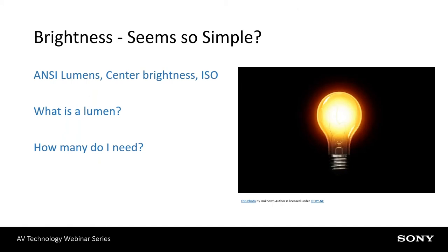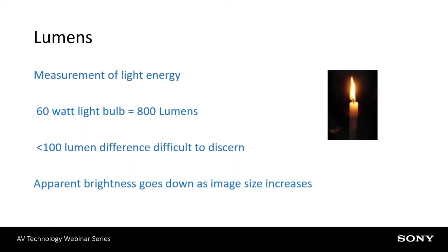Brightness seems simple enough — it's how much light does a projector put out. But it's probably not quite that simple. When you talk about brightness, you'll see specifications for something called an ANSI lumen, center brightness measurements, and the ISO has a standard. The real question is: what is the lumen and how many do I need? A lumen is a measurement of flux energy, a measurement of light energy. To give you an idea, a 60-watt incandescent light bulb is roughly 800 lumens.